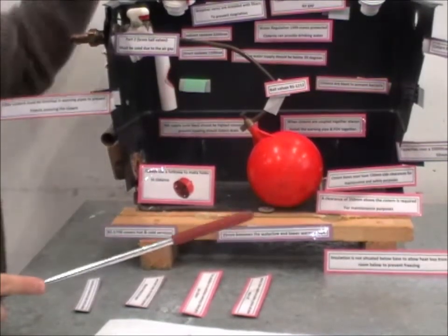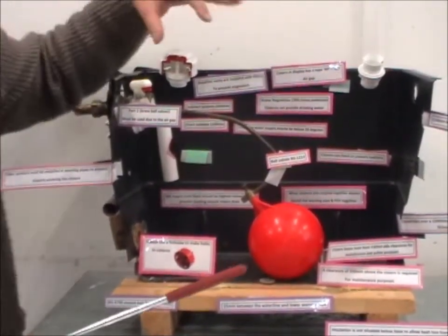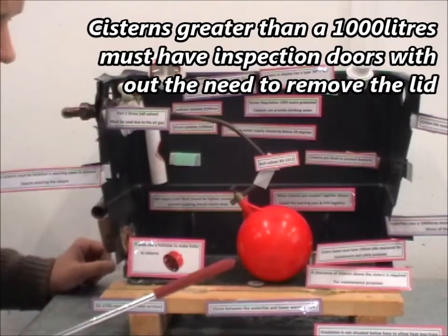Above the cistern should be 350mm clearance for maintenance purposes. So you could bend in, lean in, and have a look and inspect the cistern, maybe change the bore valve.